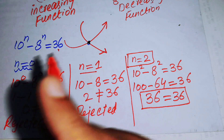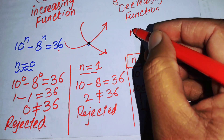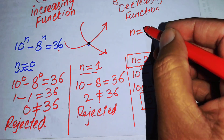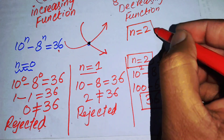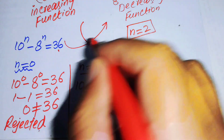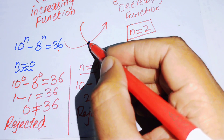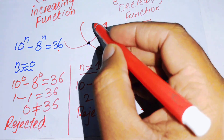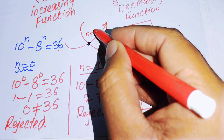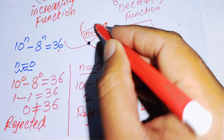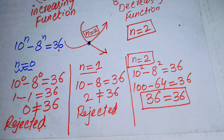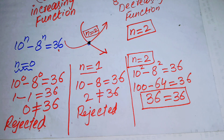Our final conclusion is that n equals 2 is the only solution of this problem. This is the unique intersection point and the final answer. Thank you so much for watching this video — please subscribe to my channel for more exciting videos.